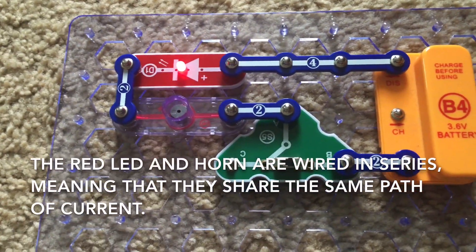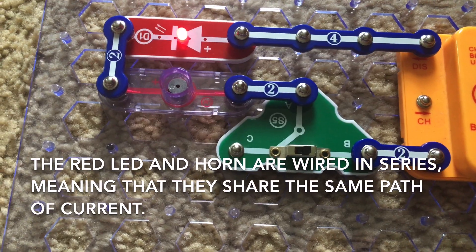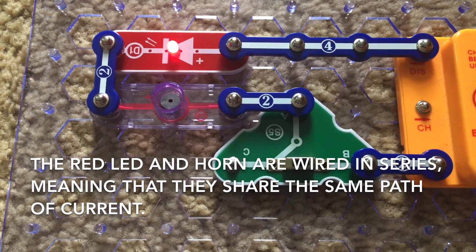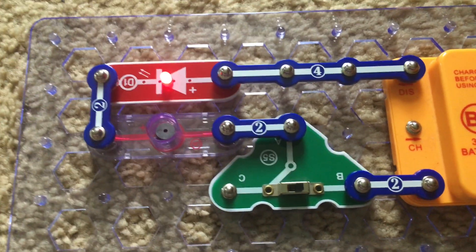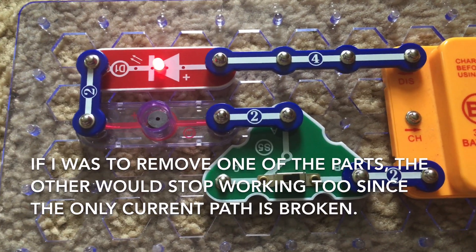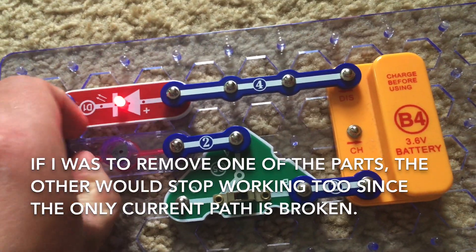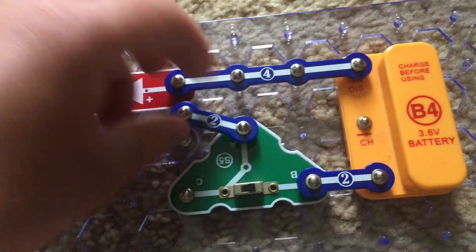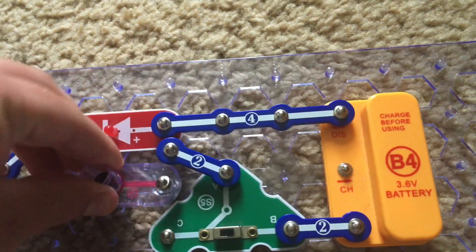Now this is a series circuit, meaning that both components share the same path of current. If I was to remove one of these components from the circuit, like the horn, the LED in this case will stop working as well.